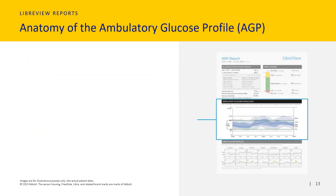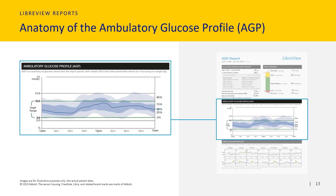We then have a section called the AGP. This shows all your glucose information for the past 14 days combined in one picture, as if they have all happened on the same day. The time of day is indicated along the bottom, starting at midnight and ending at midnight. The glucose level can be seen on the left vertical side. The green parallel lines depict your target range, which will always show as 3.9 to 10 millimoles per litre. The thick blue wavy line is called the median line, and this shows your average glucose trend throughout the day for the past 14 days. You will notice your median line rising and falling, showing how your glucose levels change on average throughout the day.